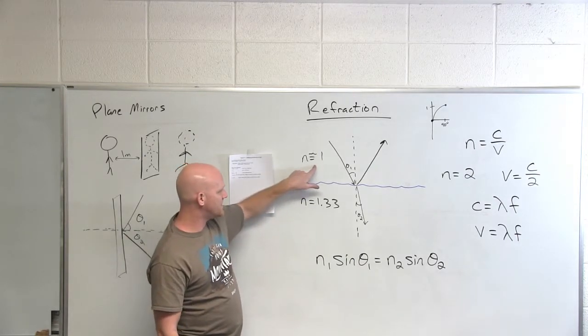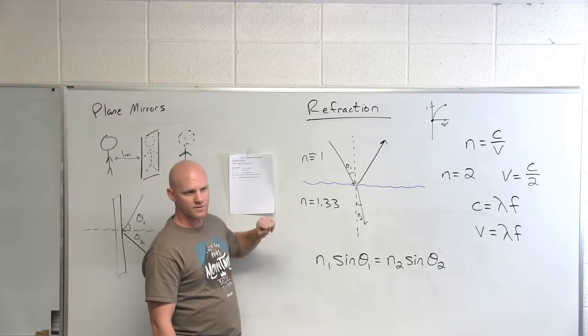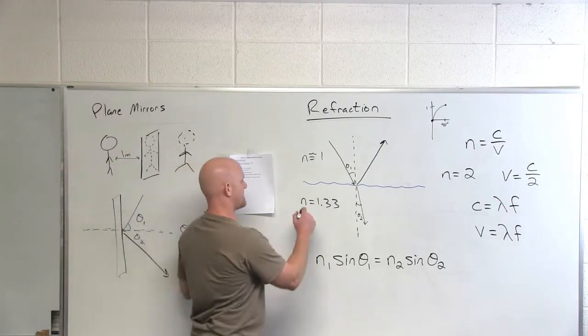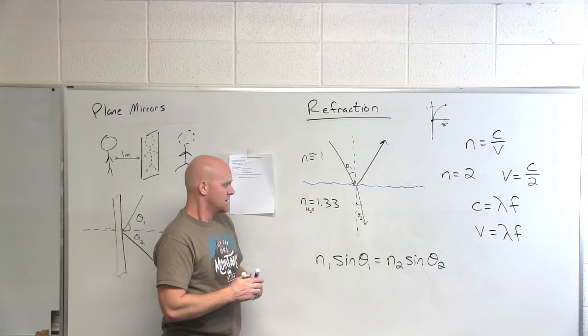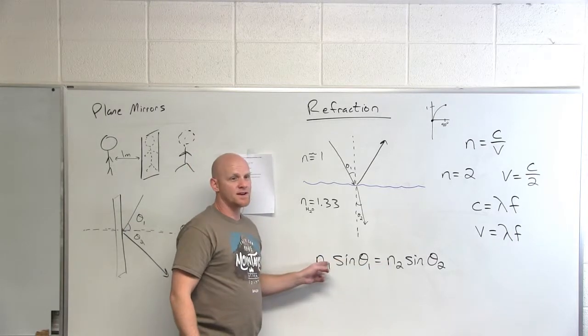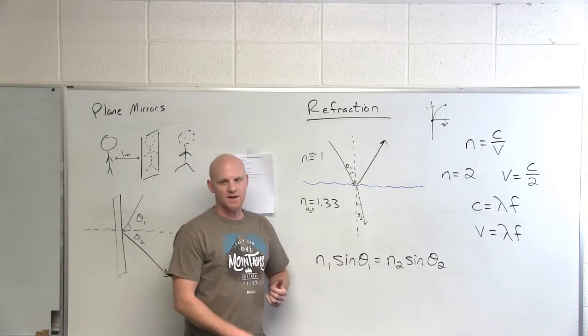So in the air above the water is 1, index of refraction is 1, and in the water itself it's 1.33. Let's even mark that. So whichever side has the bigger index of refraction is going to have the smaller value for sine theta.